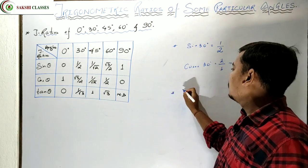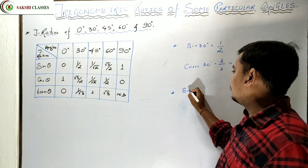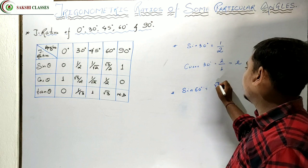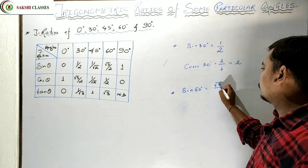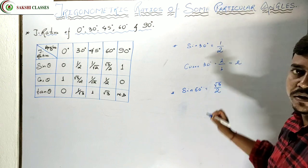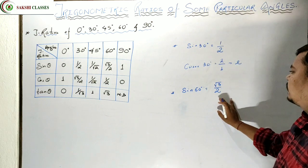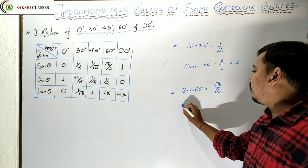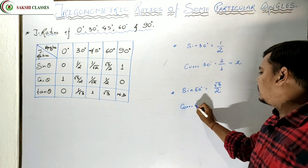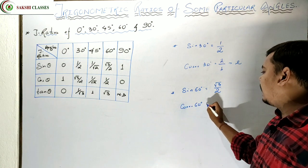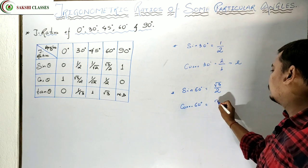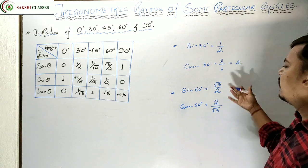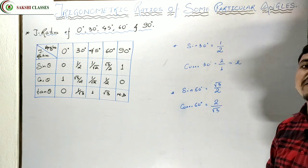Now take sin 60°. Sin 60° value is √3/2. So cosec 60° would be 2/√3 — it is simply the inverse. If you know sine, you can automatically find cosec because cosec is the inverse of sine.